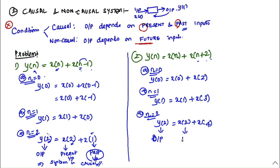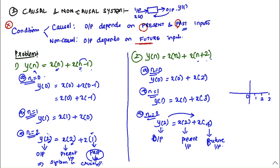In this methodology, the key concept to remember is past, present, and future — this is very important. The next example is y of n = x of n plus x of n plus 2. You need to check whether the output depends on present input, past input, or future input to determine if it is causal or non-causal.